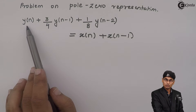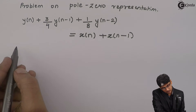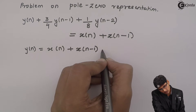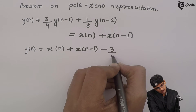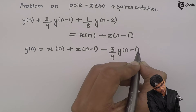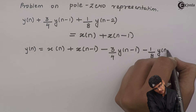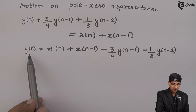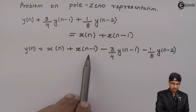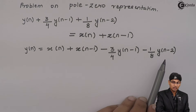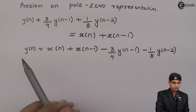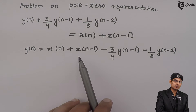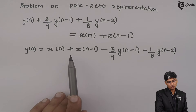We can rewrite the same equation as y(n) equals the inputs minus, bringing terms to the other side: minus (3/4)y(n-1) minus (1/8)y(n-2). This difference equation shows that the present output depends on the present input, past input, past output, and past output delayed by twice. So the output depends on many parameters.